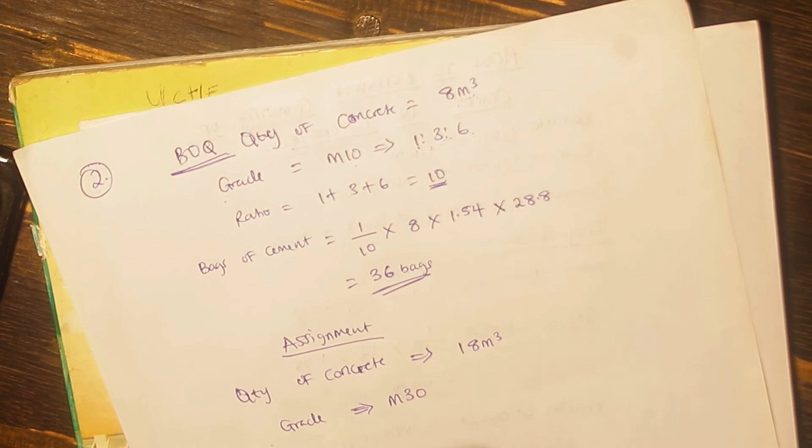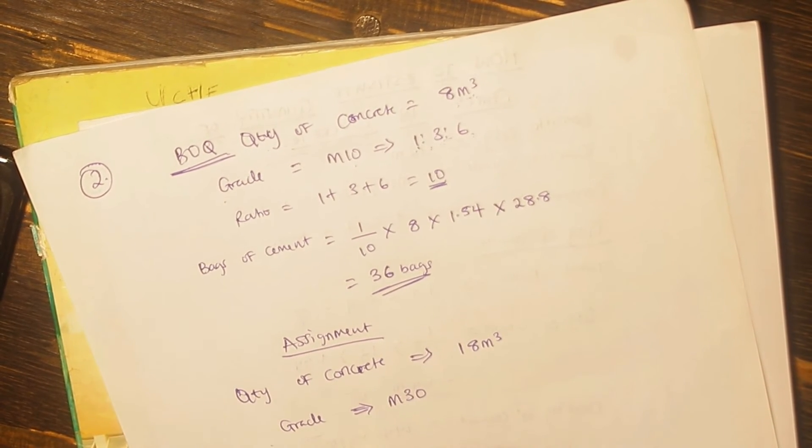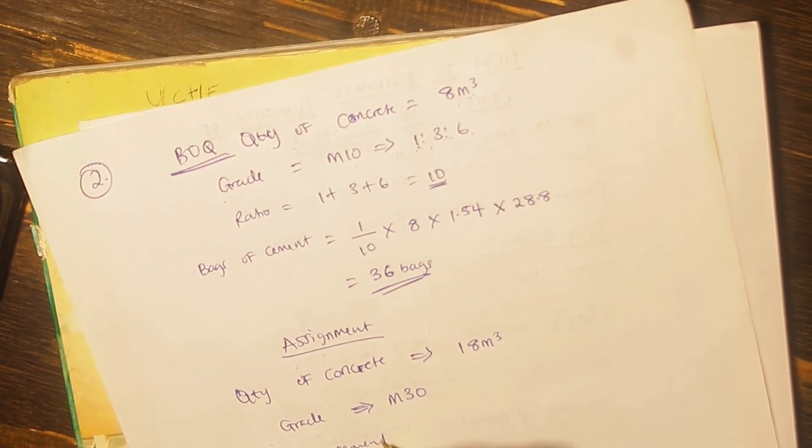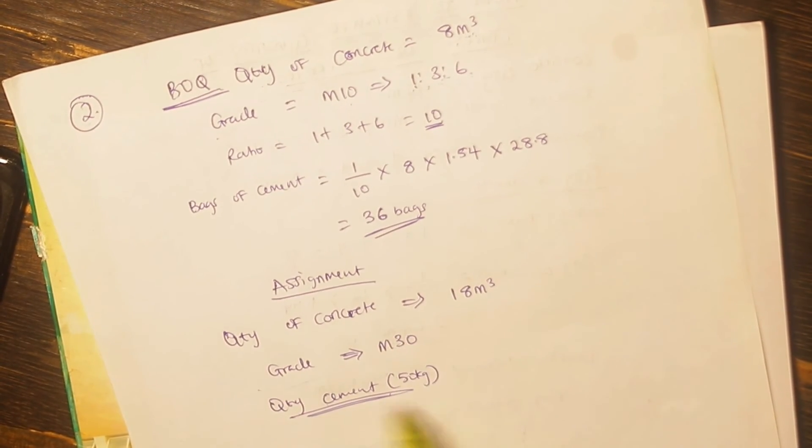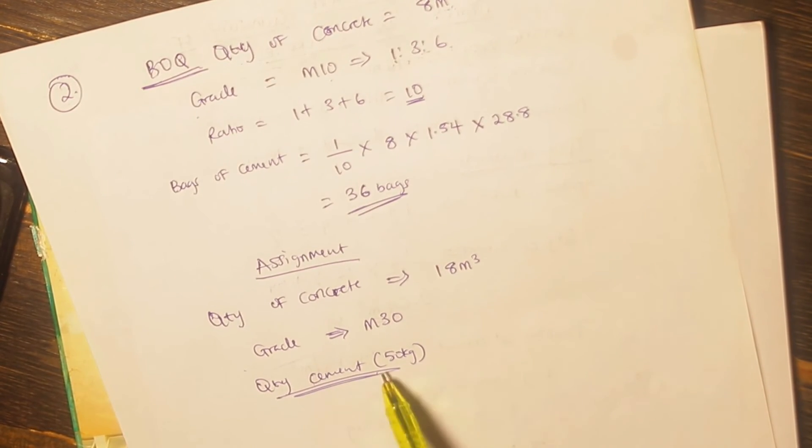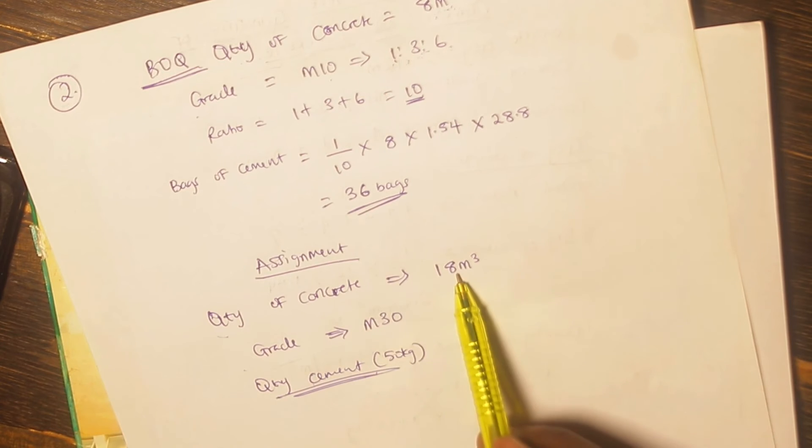So I want you to do the calculation - determine the quantity or the bags of cement, 50 kg cement, that will be used to complete this particular concrete. Determine the number of cement bags that will be used for 18 meters cube of grade M30 concrete.